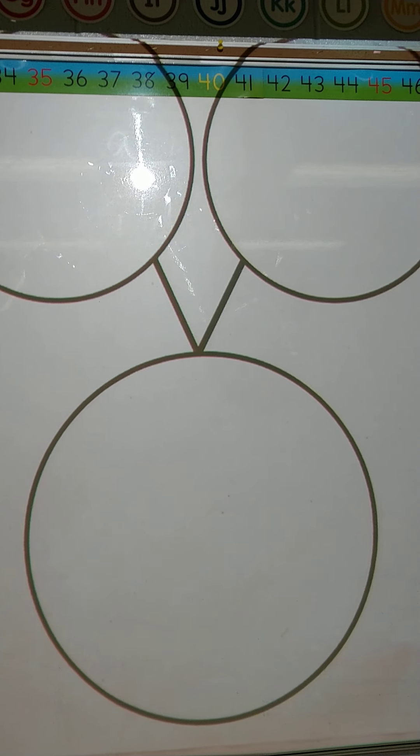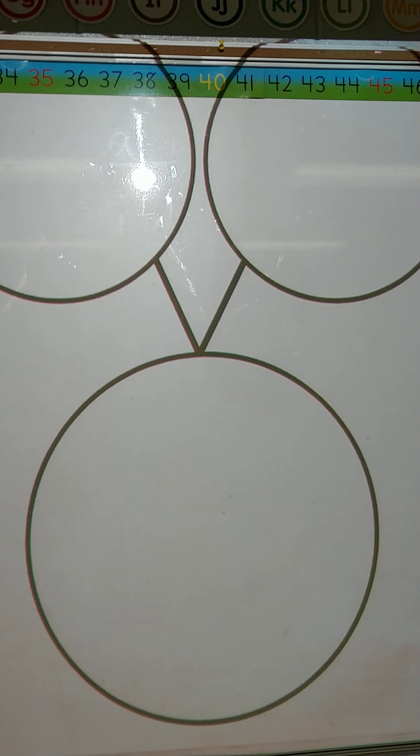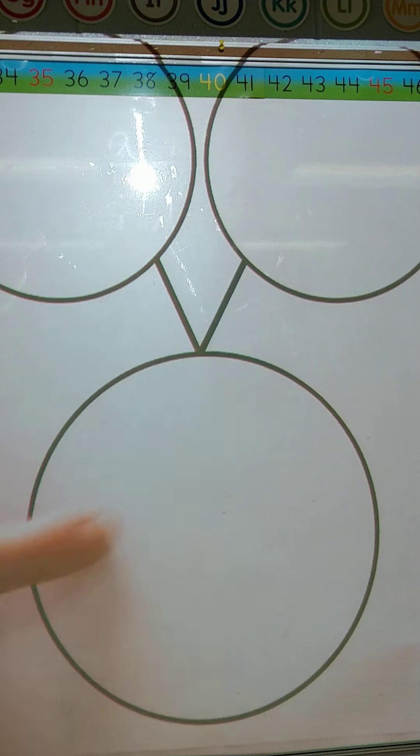This is 2.1 number bonds. This is a visual representation on how numbers go together. So we have a part, part, whole. So this part is one part, this is another part, this is the whole.